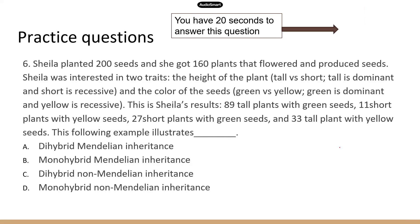This is a very long question — pause the video if you need more time. Sheila planted 200 seeds, and she got 160 plants that flowered and produced seeds. This is the tricky part: in reality, you don't usually get 100% germination. So when you use the total number of offspring, it will be 160, because the other 40 didn't germinate and you wouldn't know what they look like.